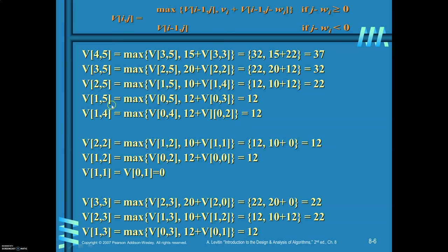V(1, 5) and V(1, 4) are both 12. Substituting those values gives V(2, 5) equal to 22. Now, V(2, 2) equals the maximum of V(1, 2) and 10 plus V(1, 1), which is the maximum of 12 and 10, giving 12. V(1, 2) is 12 and V(1, 1) is 0. Substituting back, V(3, 5) equals the maximum of V(2, 5) — already found to be 22 — and 20 plus V(2, 2) which is 12, giving 20 plus 12 equals 32. So V(3, 5) equals 32. Now we need to find V(3, 3).